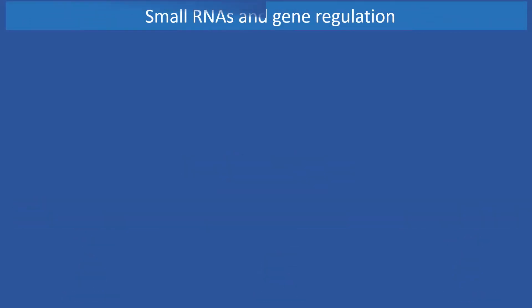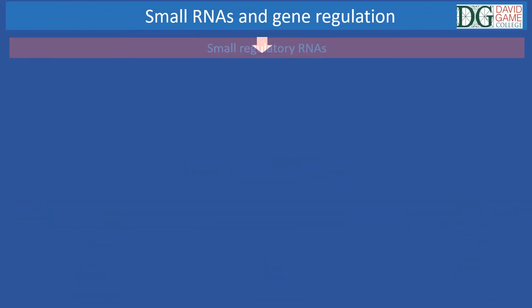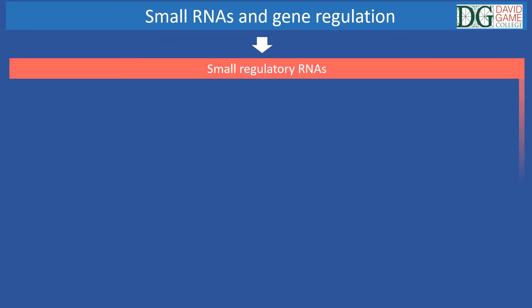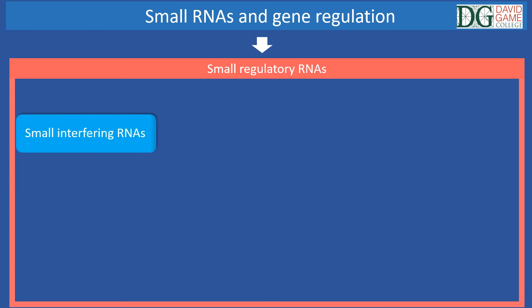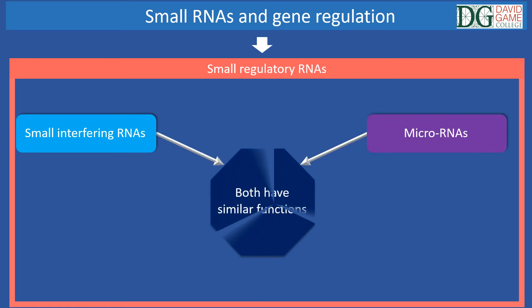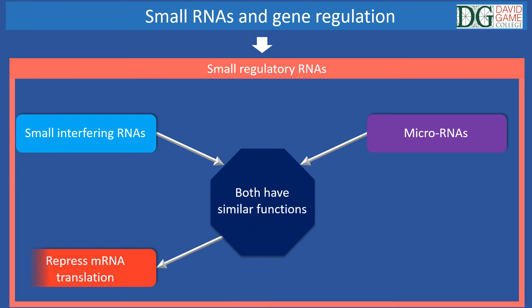Regulatory RNA molecules called small regulatory RNAs are an important and exciting recent discovery in gene regulation. Two types are recognized: small interfering RNAs and micro RNAs. Both have similar functions and can repress messenger RNA translation and can trigger messenger RNA degradation.